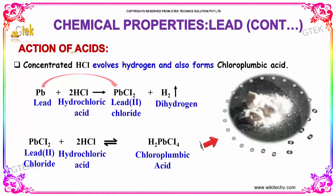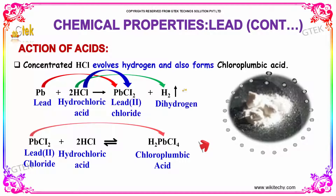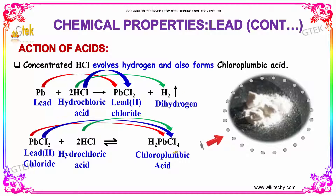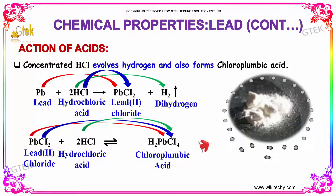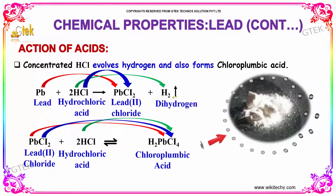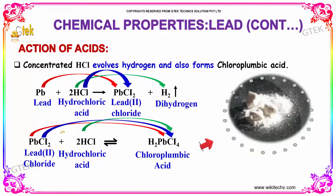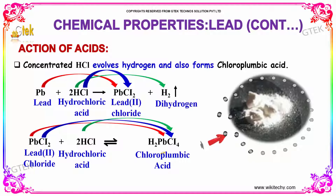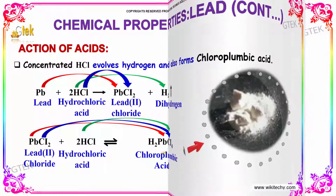Concentrated HCl evolves hydrogen and also forms chloroplumbic acid. So, lead and HCl produce lead chloride and hydrogen. Lead chloride then reacts with hydrochloric acid to form chloroplumbic acid. To be continued.